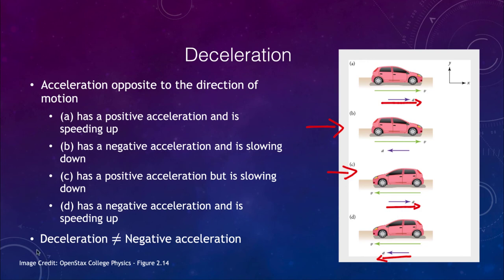We want to remember that a deceleration is different from a negative acceleration — they are not the same thing. Deceleration means you're slowing down because your acceleration is opposite to the direction of your motion. However, you can also have a negative acceleration depending on how your coordinate system is defined.